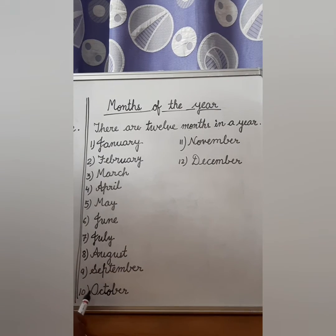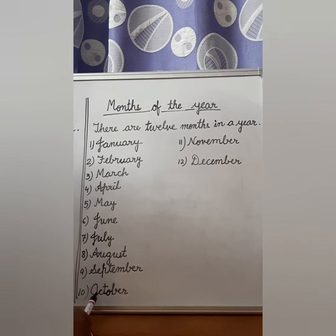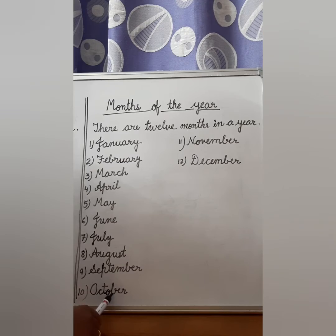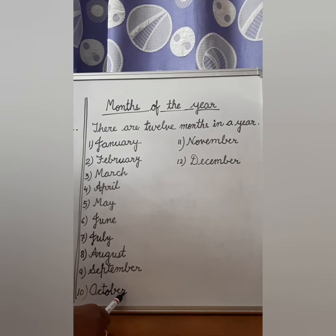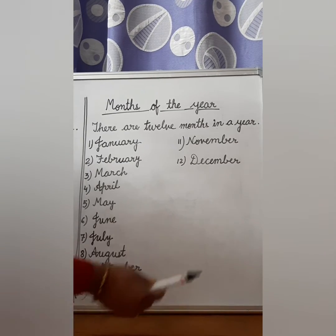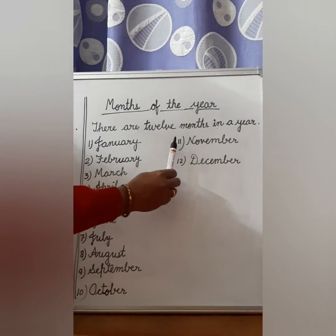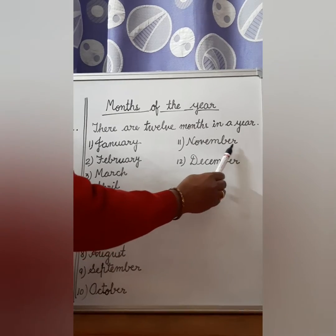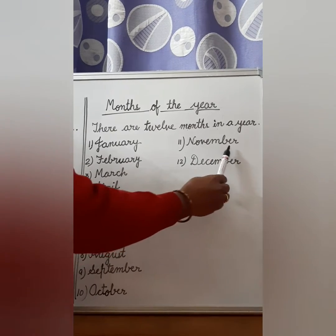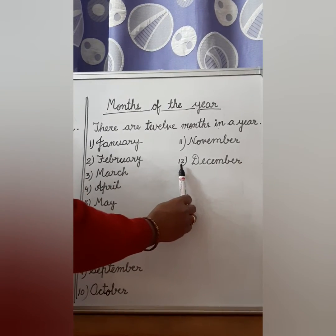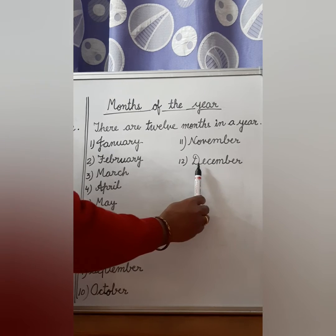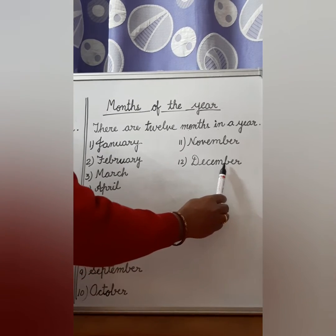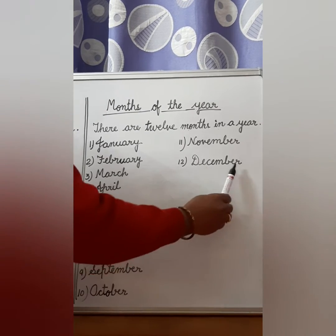Then comes number 10 — October, O-C-T-O-B-E-R, October. Then number 11 — N-O-V-E-M-B-E-R, November. Then comes number 12 — December, D-E-C-E-M-B-E-R, December.